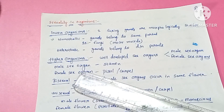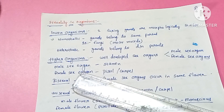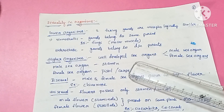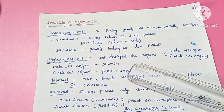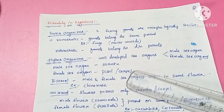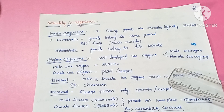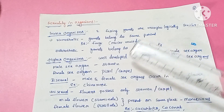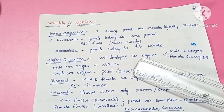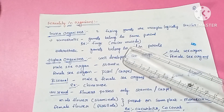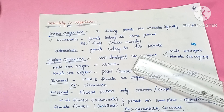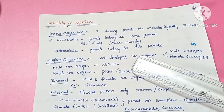In higher organisms there are well-developed sex organs, with a clear distinction between male and female sex organs. The male sex organ in flowering plants is called the stamen, and the female sex organ is called the pistil or carpel.